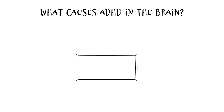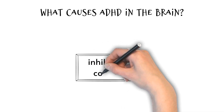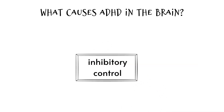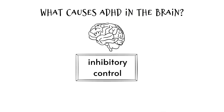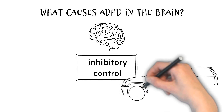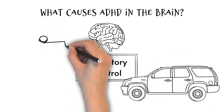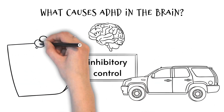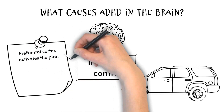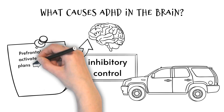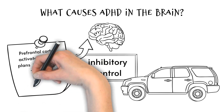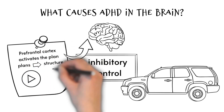In the brain, ADHD is caused by difficulties with a function called inhibitory control. Inhibitory control acts like the brain's braking system, and plays a vital role in controlling our thoughts, attention, motor movements and emotions, similar to how the brakes in a car are vital for controlling speed and direction. One way this works is by activating plans in the prefrontal cortex, which the brain uses to coordinate which thoughts and actions need to be activated and inhibited at specific times and in certain orders.